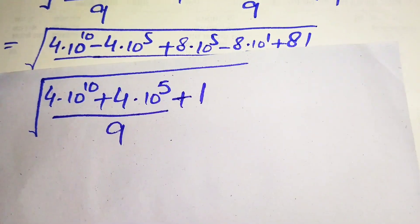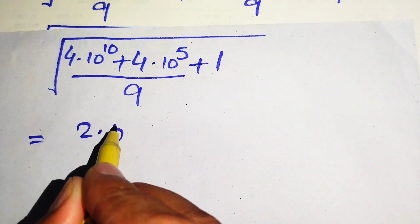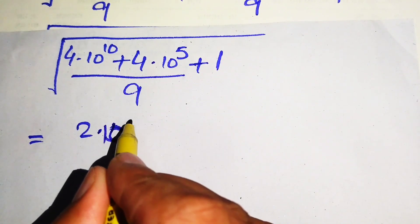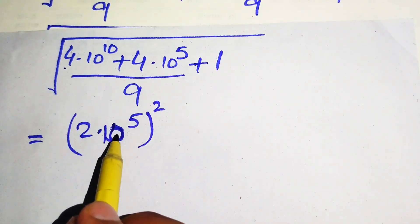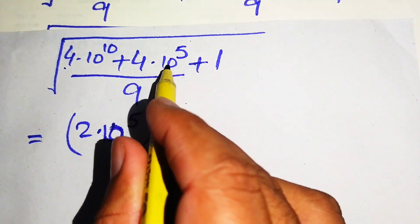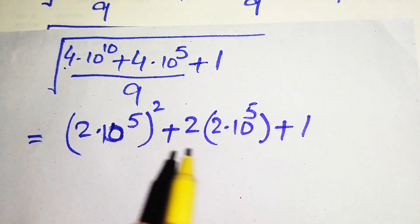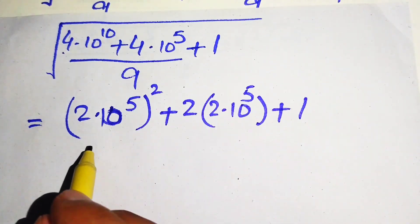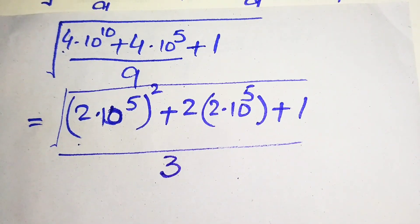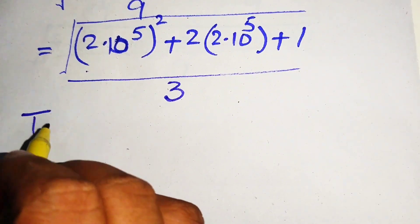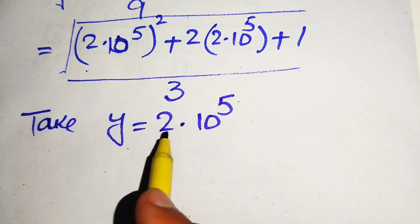We again rewrite this expression as 2 times of 2 times of 10 raised to power 5, whole squared — because the square of 2 is 4 and the square of 10 raised to power 5 is 10 raised to power 10 — plus 2 into 2 multiplied by 10 raised to power 5, plus 1. Because 2 times of 2 is 4 times of 10 raised to power 5.